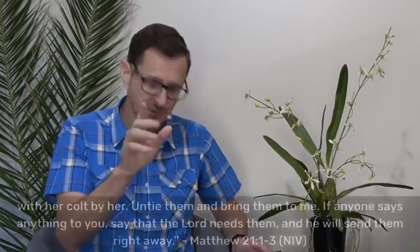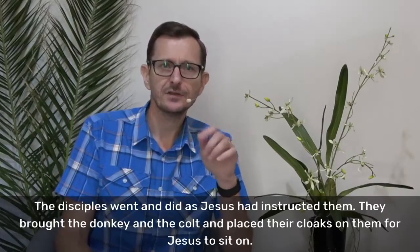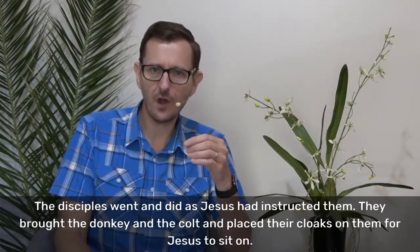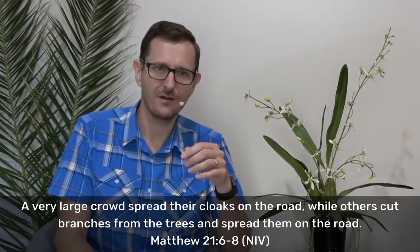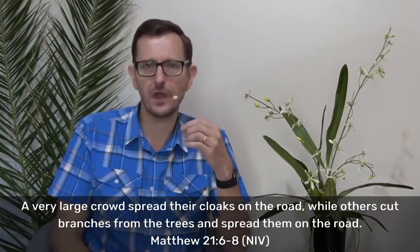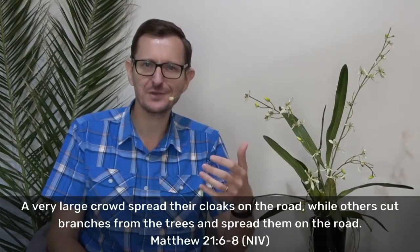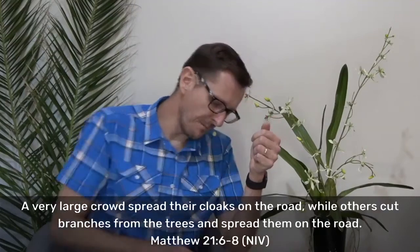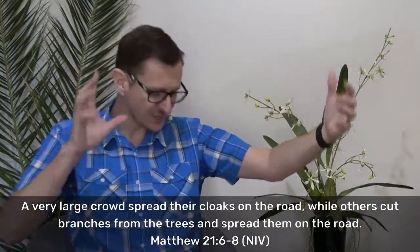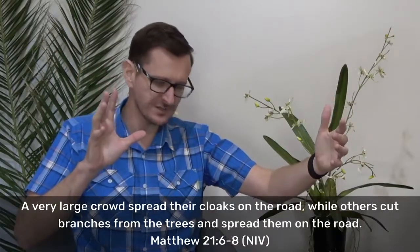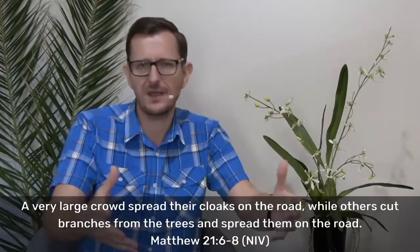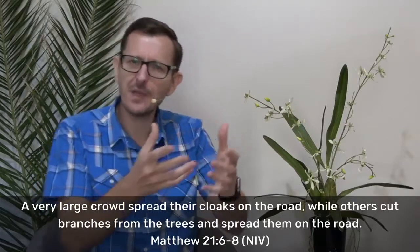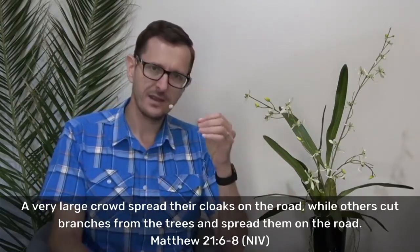But first I want us to read on. We're going to read on in Matthew chapter 21, verse 6. The disciples went and did as Jesus had instructed them. See what I mean? Off they go. They brought the donkey and the colt and placed their cloaks on them for Jesus to sit on. And a very large crowd spread their cloaks on the road, while others cut branches from the trees and spread them on the road. It's no exaggeration when the Bible says a very large crowd.